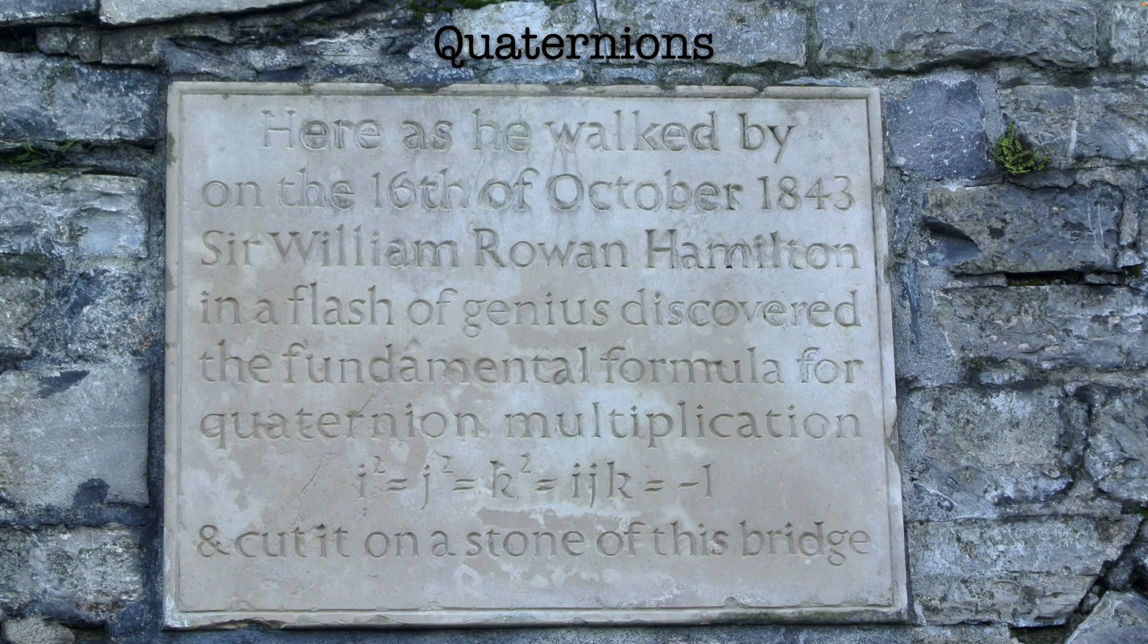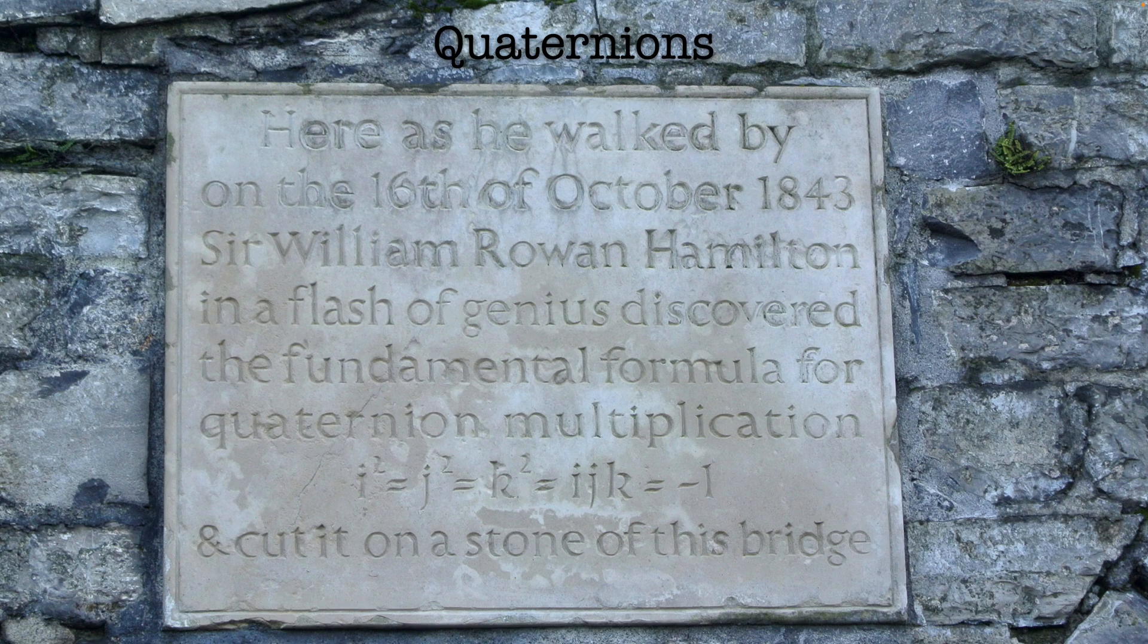Quaternions were discovered in 1843 by William Hamilton of Hamiltonian fame. He'd been trying to understand how to extend complex numbers to higher dimensions. At first, he tried to do this with two complex quantities, i and j, but just couldn't get the algebra to work out. So one day, the 16th of October to be precise, he was out walking in Dublin when he realized that his algebra would work if he had three complex coordinates.